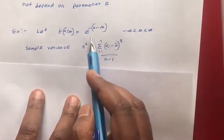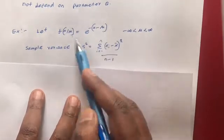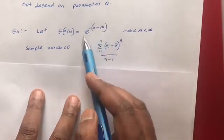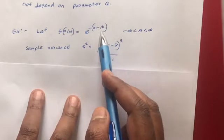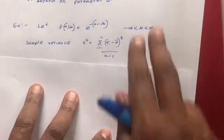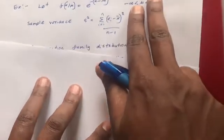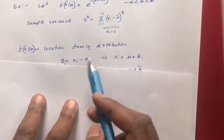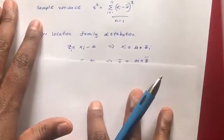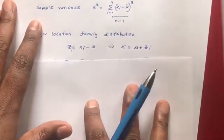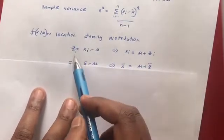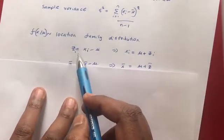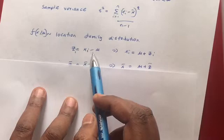When you consider this distribution, you can see it is a location distribution, and the location parameter is mu. If that is the case, you can define Z_i as Z_i equals X_i minus mu.